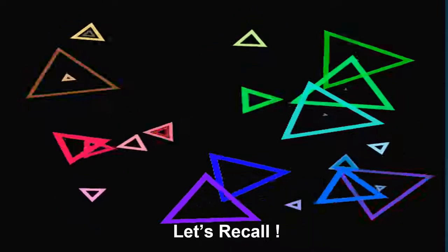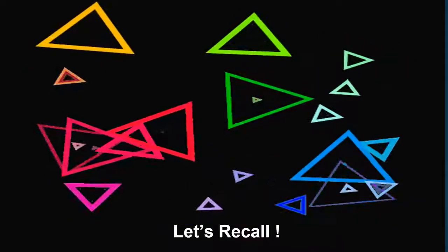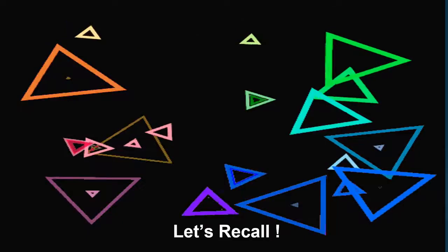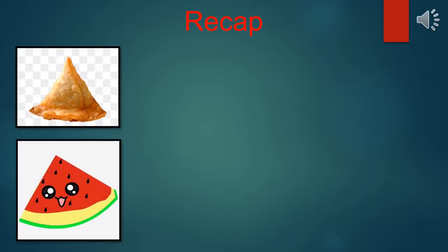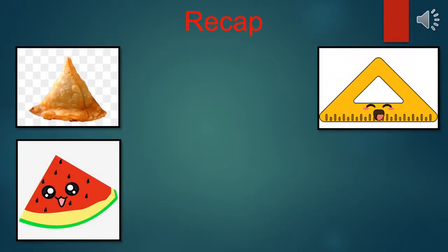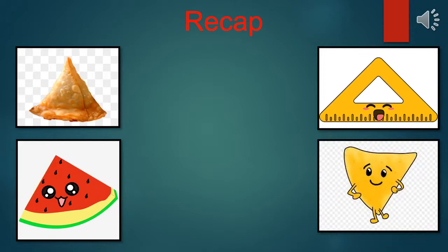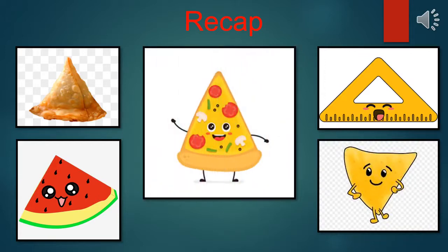So kids, now you know so many triangular shaped objects. Let's recall it again. Samosa, watermelon slice, ruler, nachos and a slice of pizza.